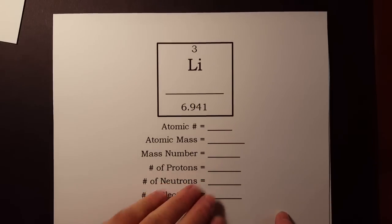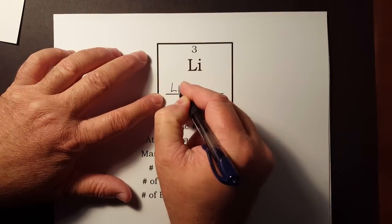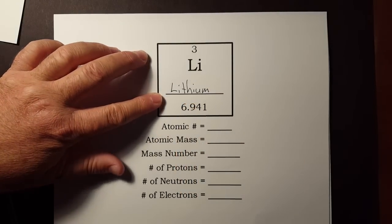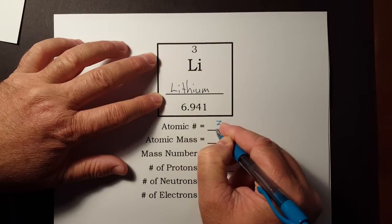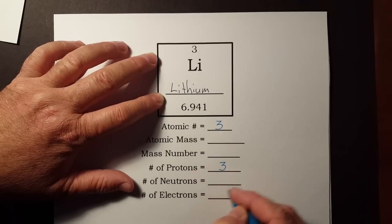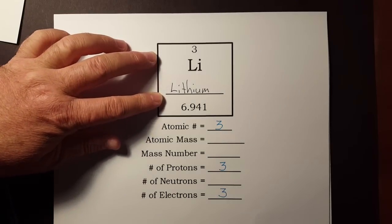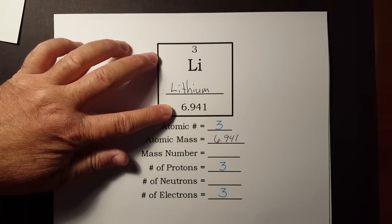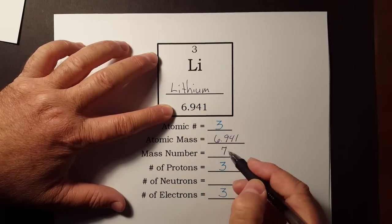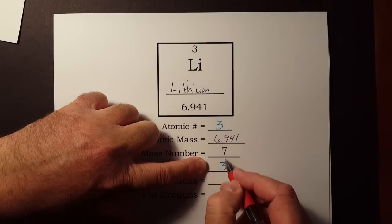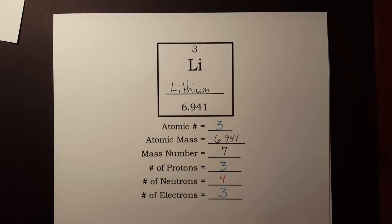One more example. Element number three. What we are missing in this box was its name, lithium. Let's bring it straight down. We know it's element number three, so that's the atomic number, which has to be the number of protons. And since it's balanced and neutral, it must equal the number of electrons. The atomic mass, we need all the decimals, 6.941. We round that to the nearest whole number of seven. That's protons plus neutrons. We already know that three of those are protons, so seven is three plus four.